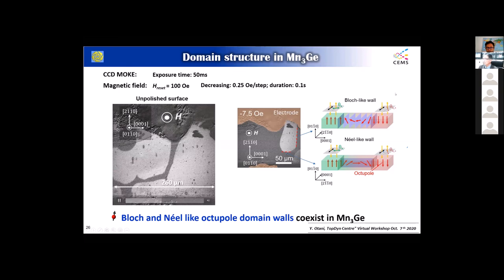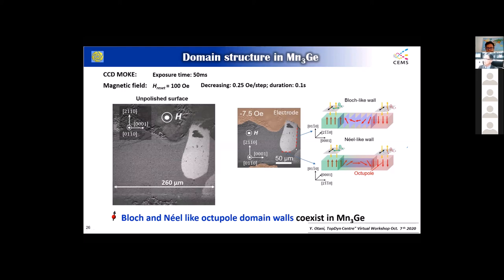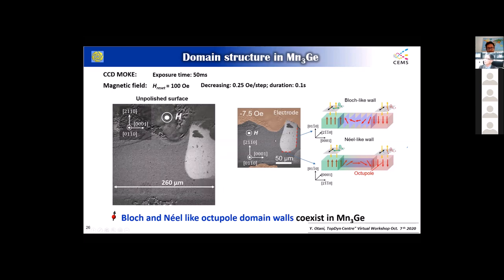Importantly, if we get a snapshot like this, we can see what's happening. The Kagome plane is oriented like this, so one part shows a block-like domain wall, and another shows more of a Néel-type. As I said at the beginning, the energy scales for both are very similar, so they can co-exist — unlike in ferromagnets.